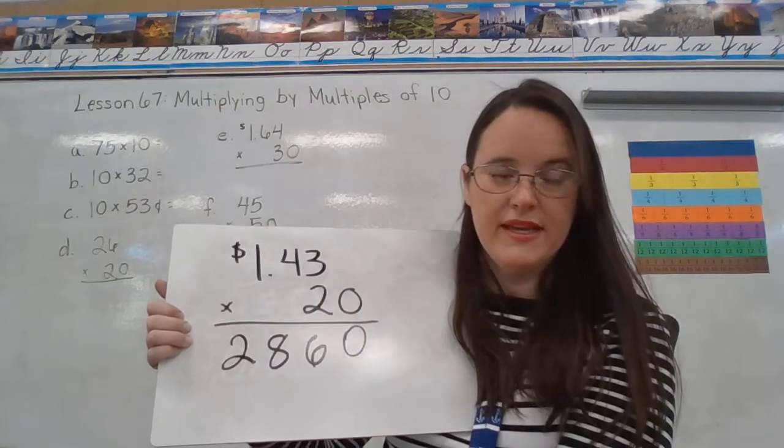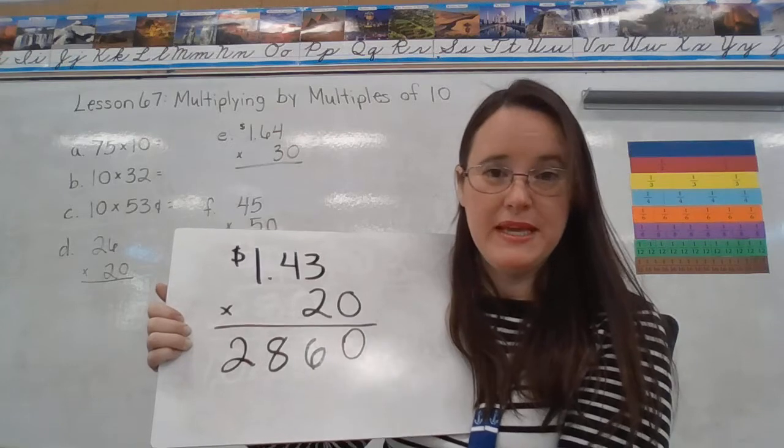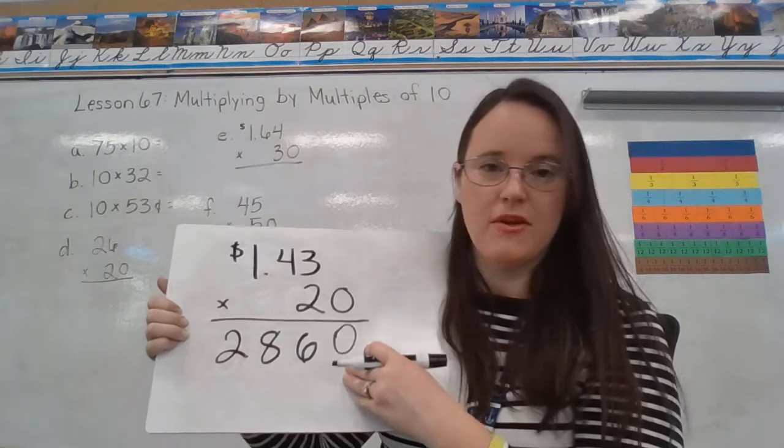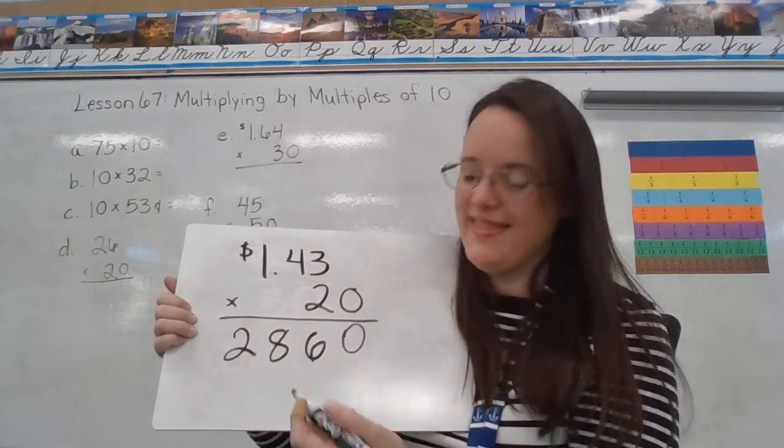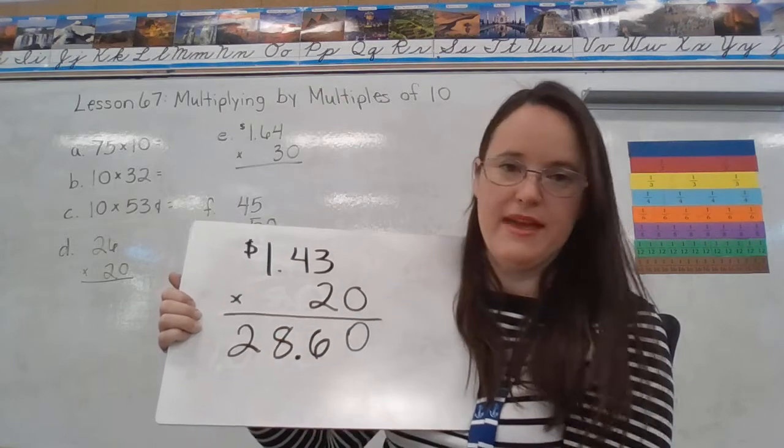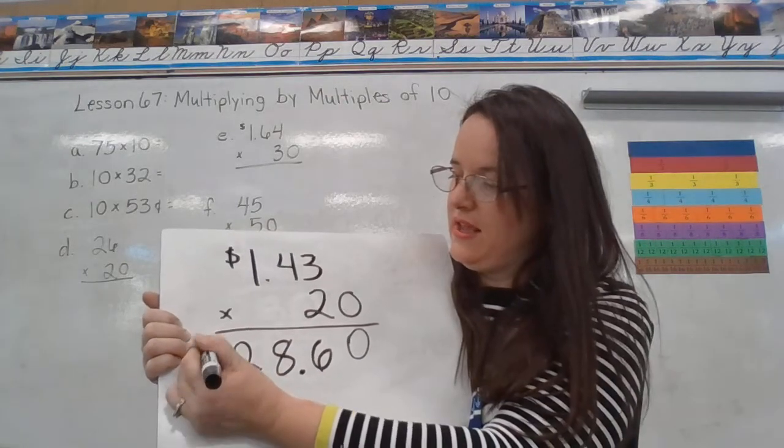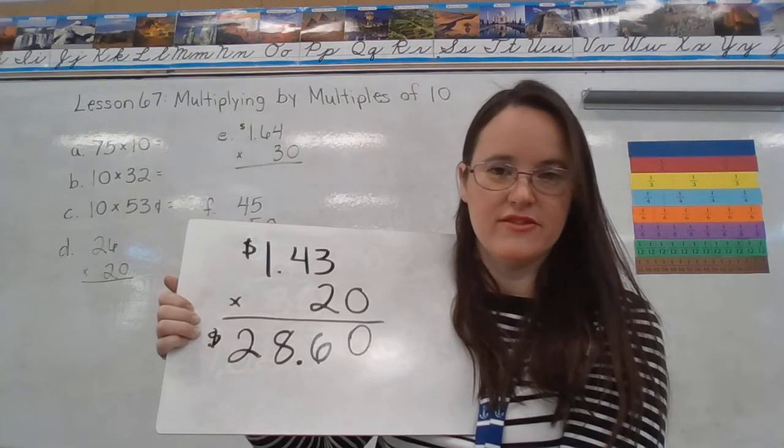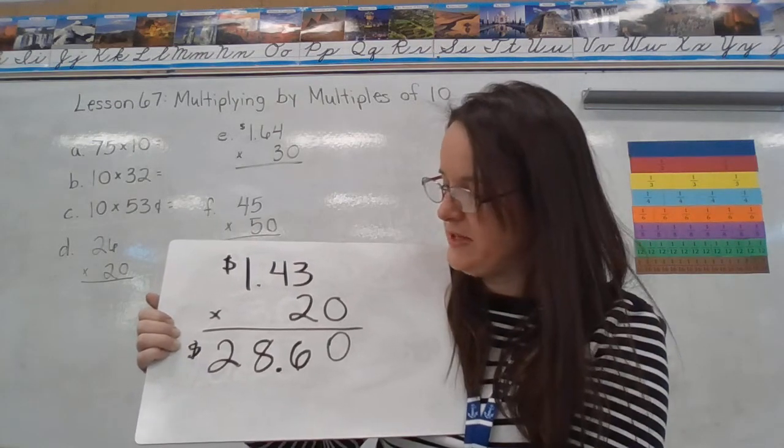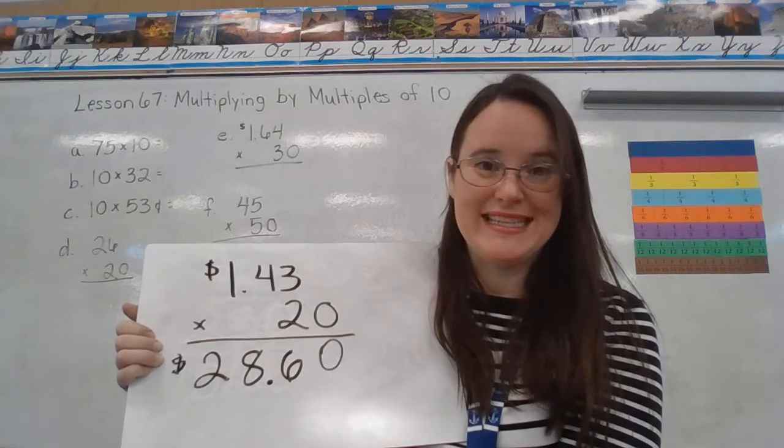I'm multiplying money, so my answer is going to be money. So, once I've got all my digits written down, then I can go back in and go, okay, my decimal point needs to go there for the change. And, we've got a dollar sign. So, the total order will be $28.60.